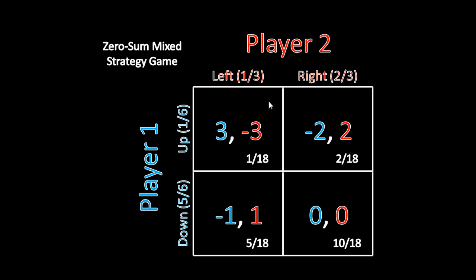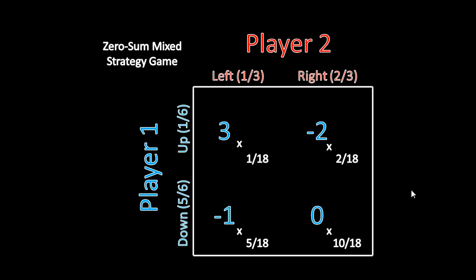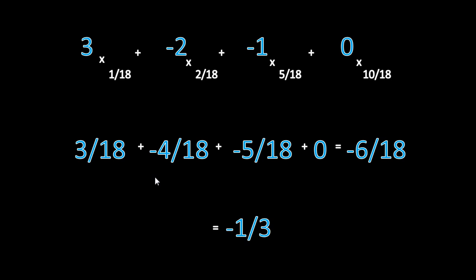We need to take the expected utility — or calculate the expected payoff of this game — given the mixed strategy Nash equilibrium. We know how to do that from the last unit. The first step is to multiply the probability of each individual outcome: the up-left outcome occurs with probability 1/6 × 1/3 = 1/18; down-left with 5/6 × 1/3 = 5/18; up-right with 1/6 × 2/3 = 2/18; and down-right with 5/6 × 2/3 = 10/18. We then multiply these by Player 1's payoffs: 3 × 1/18, negative 2 × 5/18, negative 1 × 2/18, and 0 × 10/18. That gives us 3/18 + (−4/18) + (−5/18) + 0, which sums to −6/18 or negative 1/3.